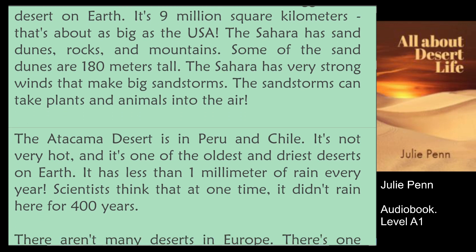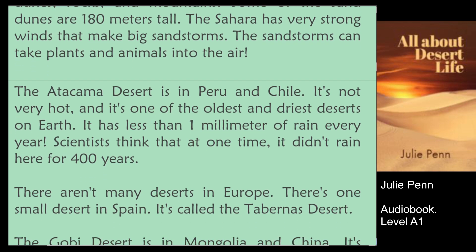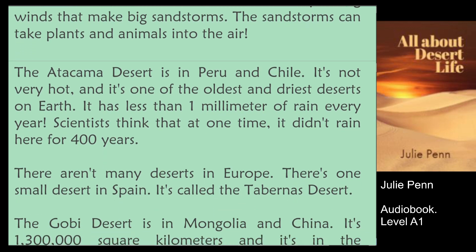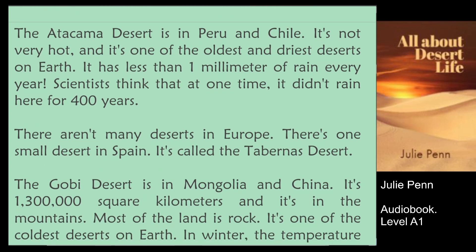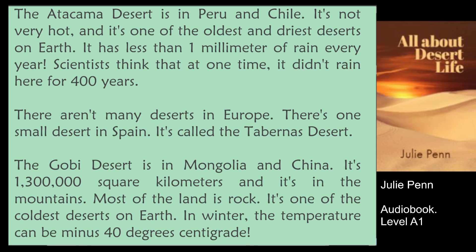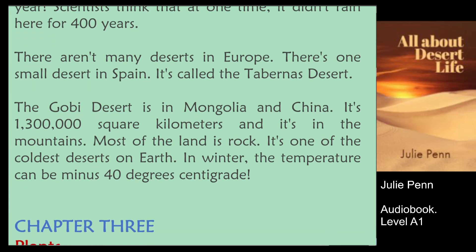The sandstorms can take plants and animals into the air. The Atacama Desert is in Peru and Chile. It's not very hot, and it's one of the oldest and driest deserts on Earth. It has less than one millimeter of rain every year. Scientists think that at one time, it didn't rain here for 400 years. There aren't many deserts in Europe. There's one small desert in Spain called the Tabernas Desert.